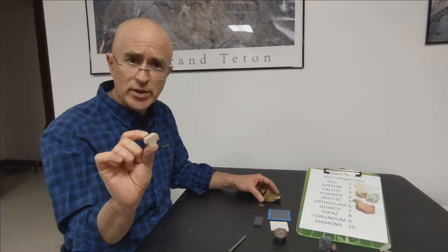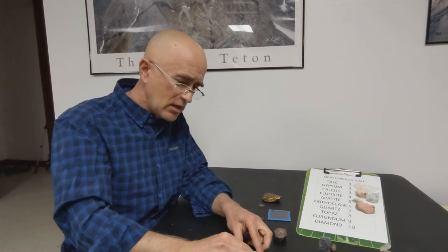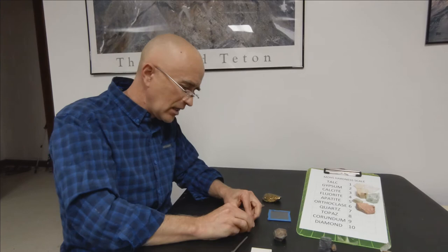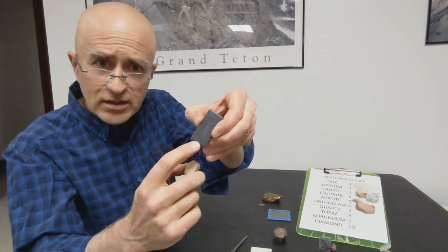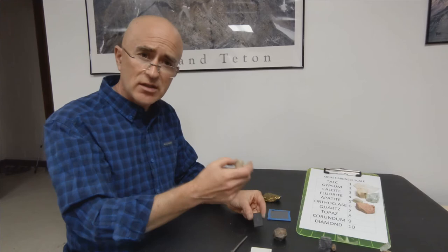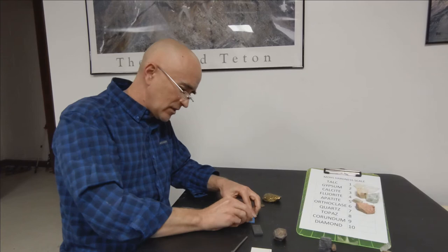Let's try this again. Here's a mineral my son picked up in Colorado up in the mountains. If I approach the streak plate, I don't see anything. Let's try the black streak plate. Now if I rub it on the black streak plate, you can see I've got a little bit of a white streak right there. So it's probably softer than the streak plate if I'm getting a streak.